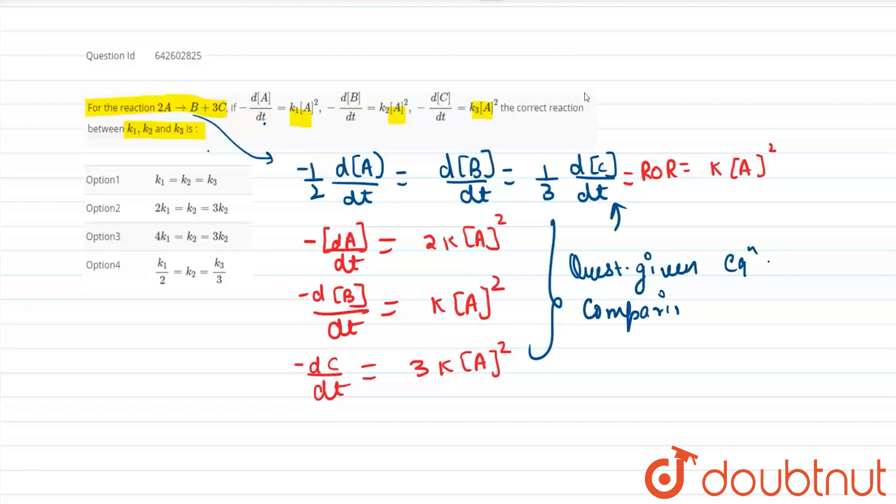So on comparing, what do I find? On comparing friends, I get a very interesting result that k1 is equals to 2k. From this point I can tell that k2 is equals to k and for k3 I can say that k3 is equals to 3 times k.